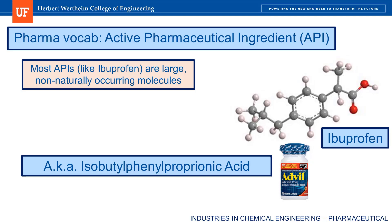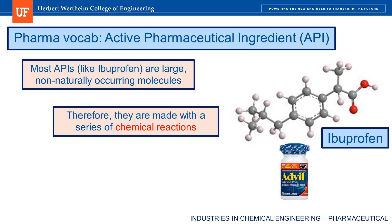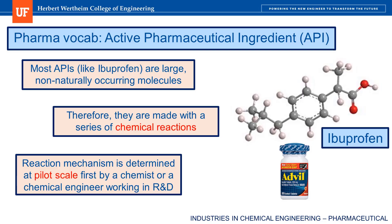Many APIs are similarly complex molecules and cannot be found anywhere naturally occurring. This means that these molecules must be made by a series of chemical reactions. While a chemist would likely develop the reaction pathway and the reaction mechanism, it is the chemical engineer's job to scale the process up to a commercial scale.